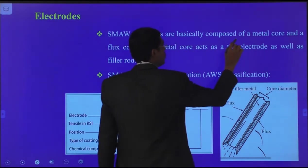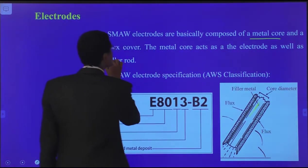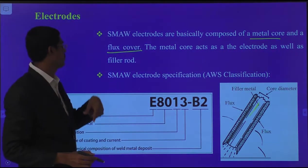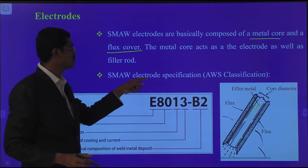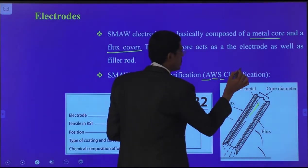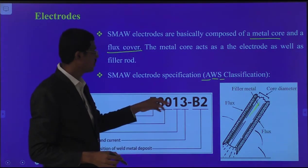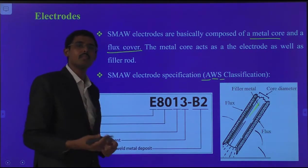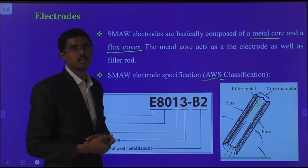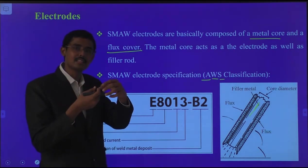Now we come to the SMAW electrode composition: basically composed of a metal core and a flux cover. The metal core acts as the electrode as well as the filler rod. SMAW electrode specifications are defined by the American Welding Society (AWS) classification — for example, electrode E8013-B2. Classifications are given for electrodes depending on strength factors and flux alloying systems. The alloying system increases the metallurgical properties of the metal.